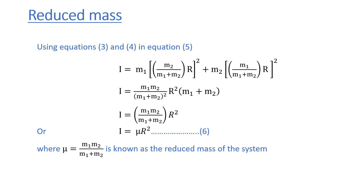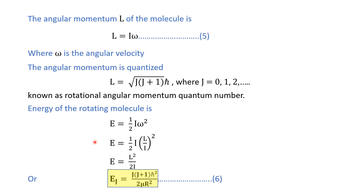The angular momentum of the molecule is L equals I·omega. At the molecular level, angular momentum is quantized, so L equals the square root of j(j+1)·ℏ, where j equals 0, 1, 2, 3, ... and j is known as the rotational angular momentum quantum number. The energy of the rotating molecule is given by one-half I·omega².